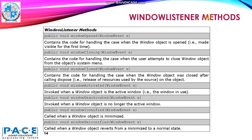Another example is the WindowListener class provided by Java. The method windowOpened contains the code for handling the case when the window object is opened — that is, made visible for the first time. The method windowClosing contains the code for handling the case when the user attempts to close the window object from the object's system menu. The method windowClosed handles the case when the window object was closed after calling dispose on the object. WindowActivated is invoked when a window object is the active window, and windowDeactivated is invoked when the window object is no longer the active window. windowIconified is called when a window is minimized, and windowDeiconified is called when a window object reverts from a minimized to normal size.